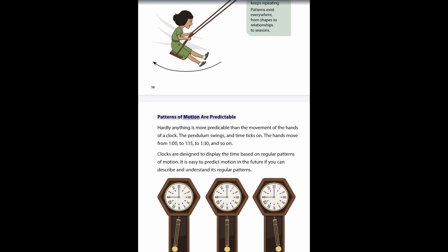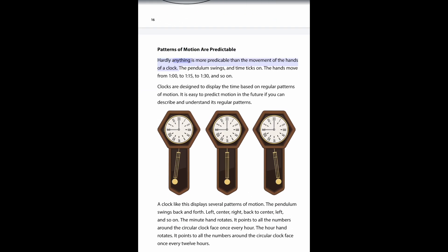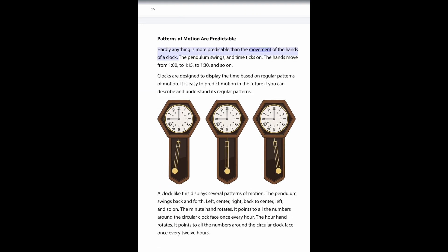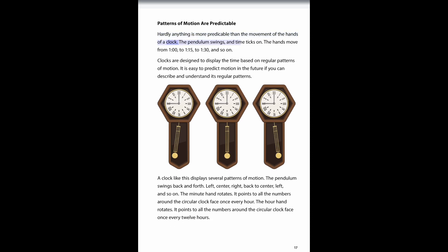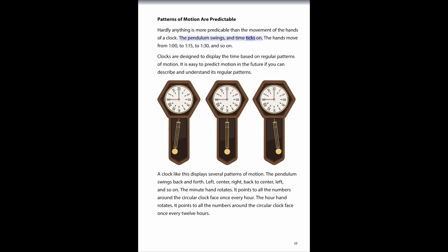Patterns of motion are predictable. Hardly anything is more predictable than the movement of the hands of a clock. The pendulum swings, and time ticks on. The hands move from 1 to 1:15 to 1:30 and so on. Clocks are designed to display the time based on regular patterns of motion.